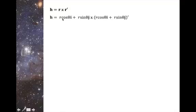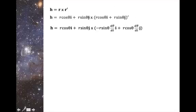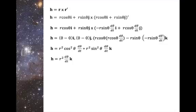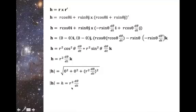We can represent this in polar coordinate form and then take the derivative. We can now take the cross product of first and last term. This simplifies to r squared dθ/dt times k. We can then find the magnitude, which is equal to r squared dθ/dt.